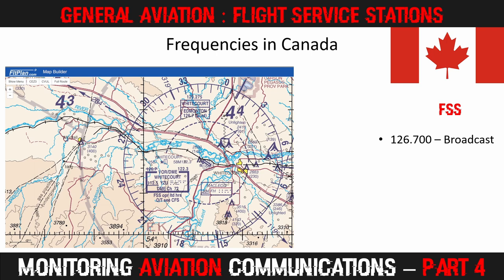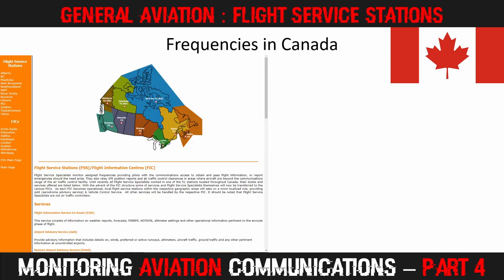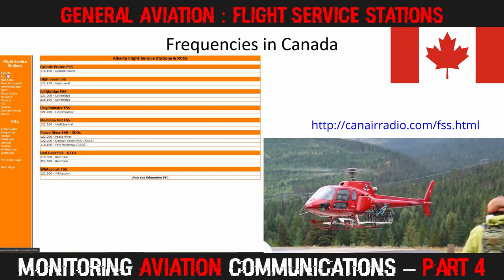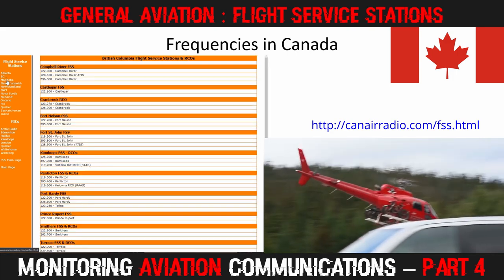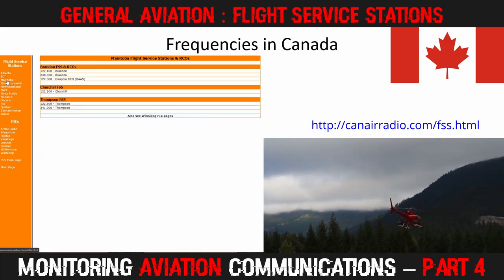In Canada, the main FSS frequency was always 126.7, but its use is now changing. Generally, it is being used for broadcast only — in other words, the flight service station will broadcast reports of significant weather or other important information without expecting an acknowledgement from pilots. Across Canada now, the frequencies listed here are being used by pilots to call flight service stations, to open and close flight plans, request other information, and listen for other airborne traffic. Viewers in Canada may be interested in visiting canairradio.com/fss.html, where you will find a list of common FSS frequencies as well as individual ones by province. Non-standard frequencies like 118.1 or 121.0 are listed by the province they are in use in — a particularly helpful resource for those in Canada.